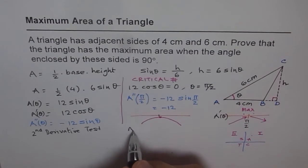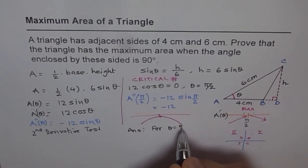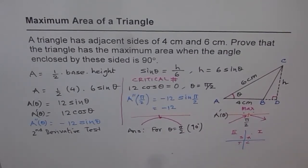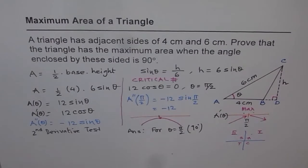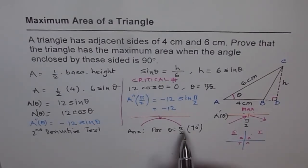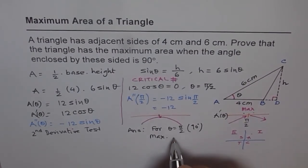So now we can write down our answer. That for theta equals to pi by 2, let me write 90 degrees also. Remember one thing. Whenever we are working with trigonometry we are actually working with angles in radians. So we calculate answers in radians and then translate them into degrees. So for theta equals to pi by 2, that is 90 degrees, we indeed have maximum area.